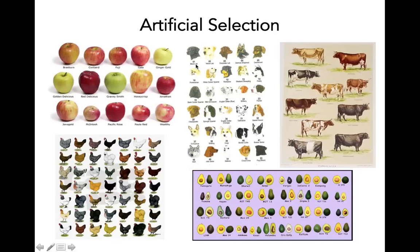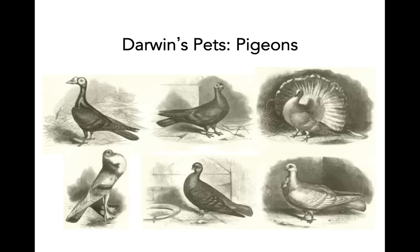Artificial selection has been applied to all of our modern agricultural and horticultural varieties. Darwin actually experimented with artificial selection. He infiltrated one of the most popular social circles of London at the time, which were pigeon fanciers — people who raised pigeons for their particular characteristics. He writes extensively in Origin of Species about how he was able to develop new varieties of pigeons.